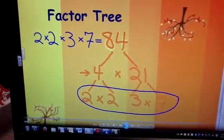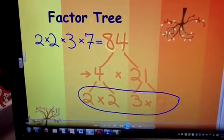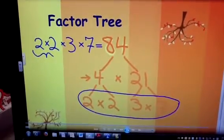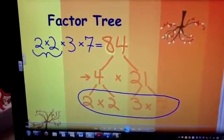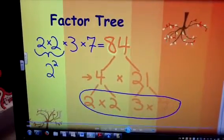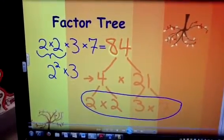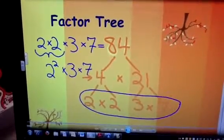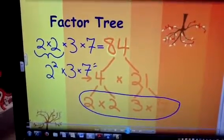Now if you want to extend it just a little bit further, again we can look at 2 times 2 and rewrite this as an exponent. So 2 to the second power times 3 times 7 is equal to 84.